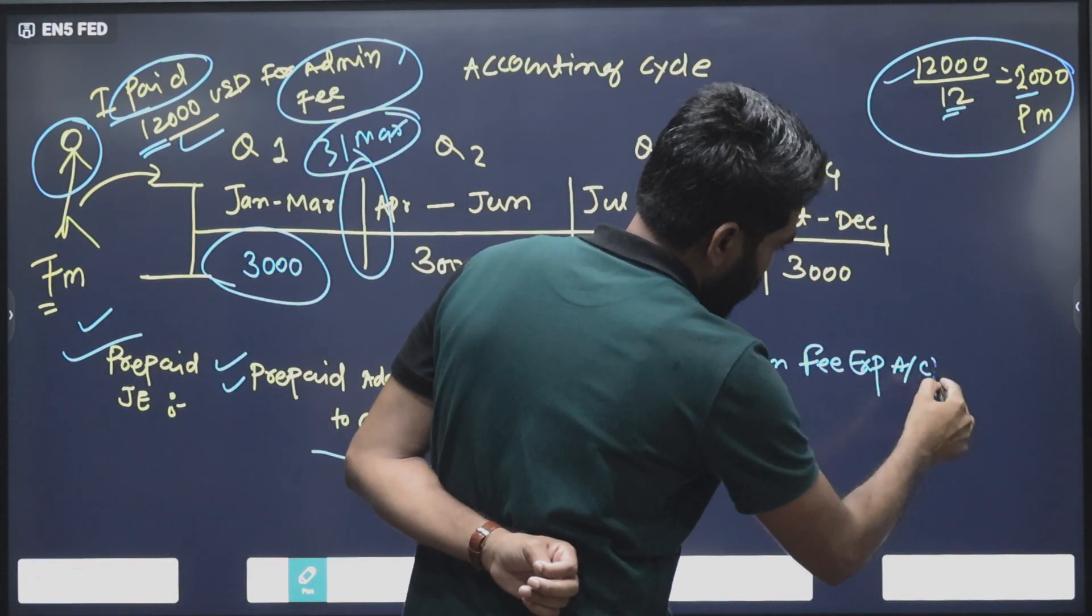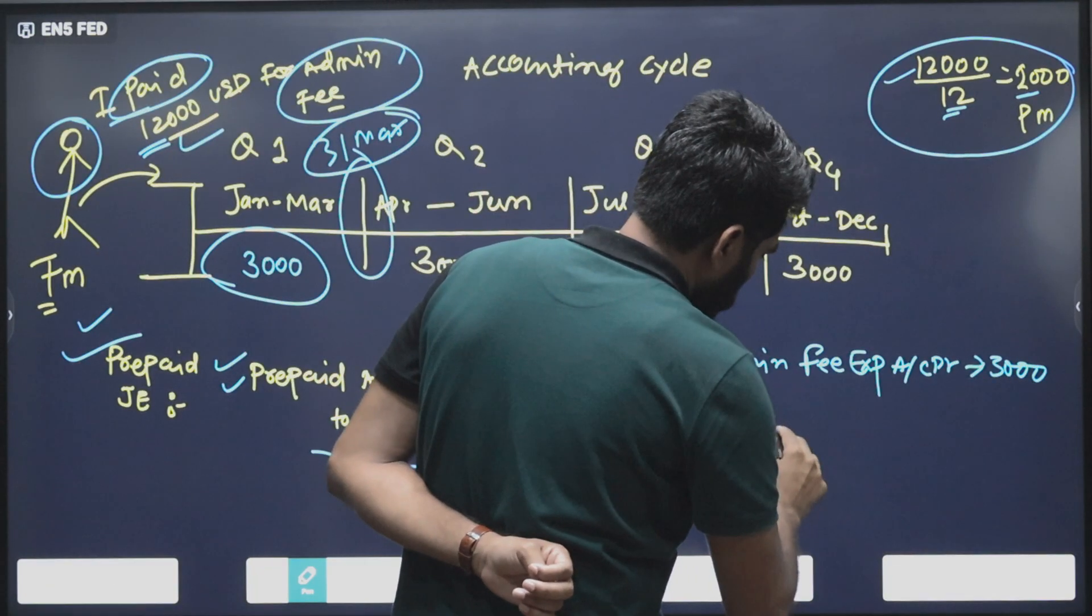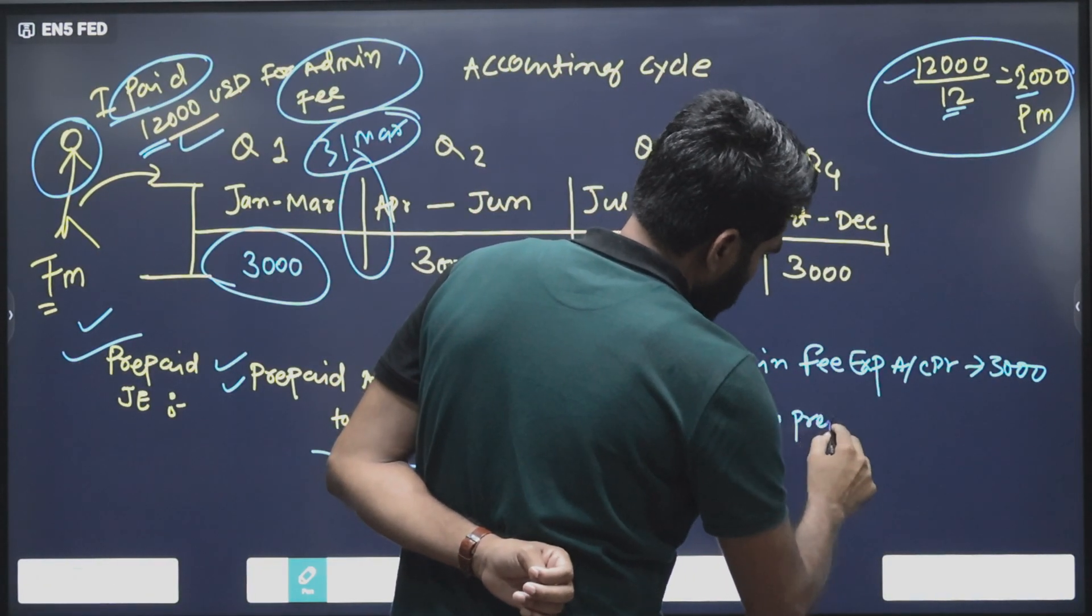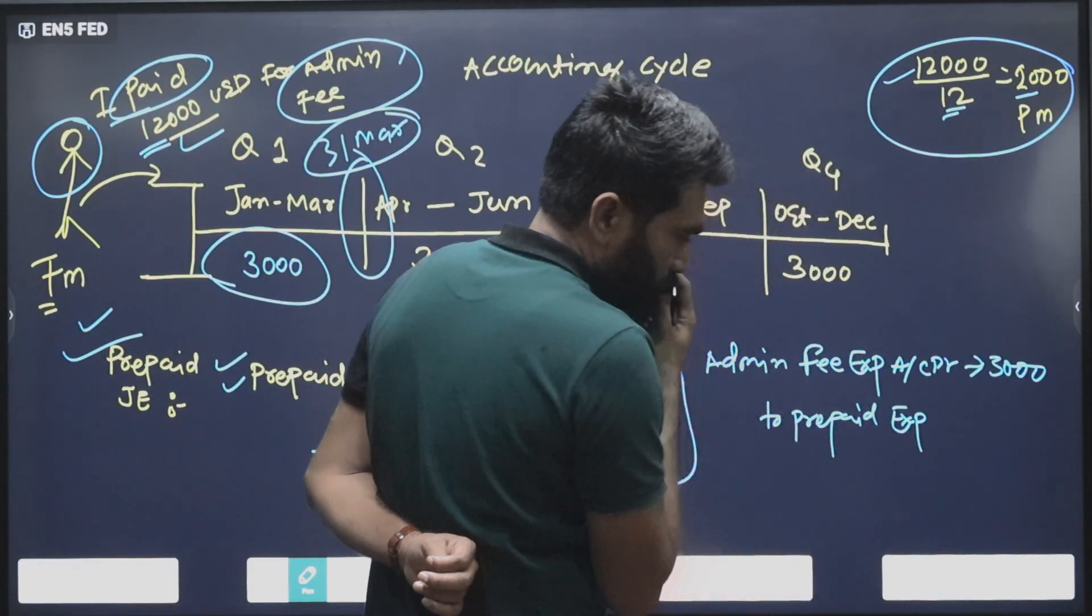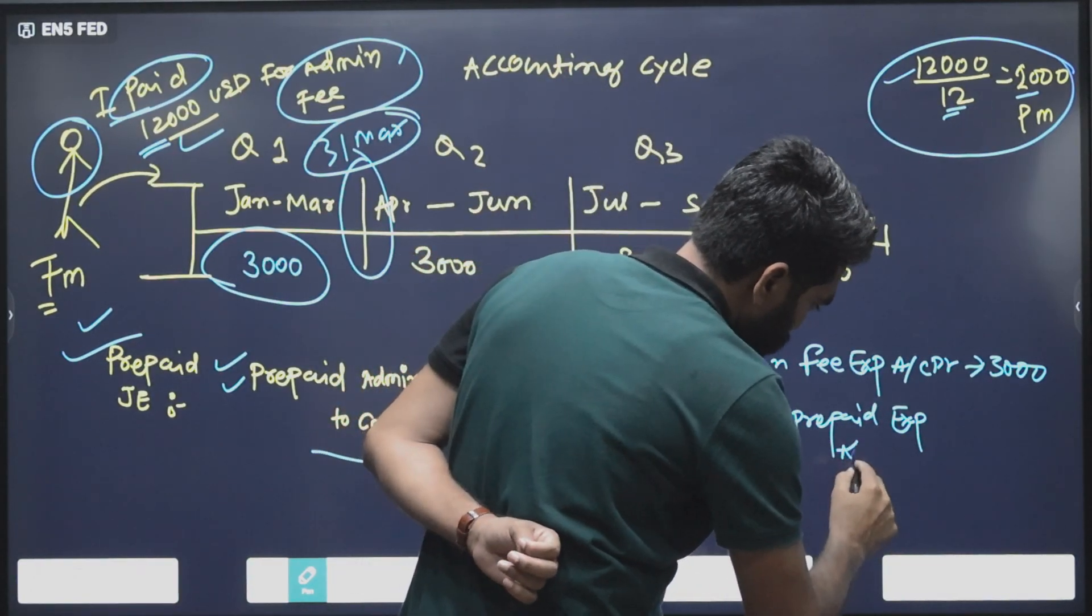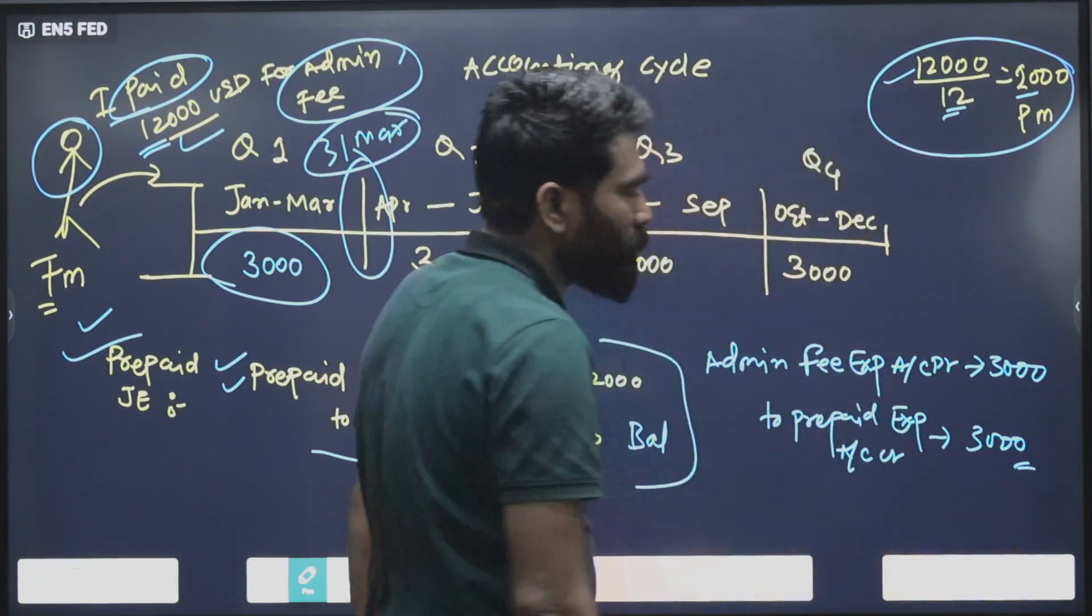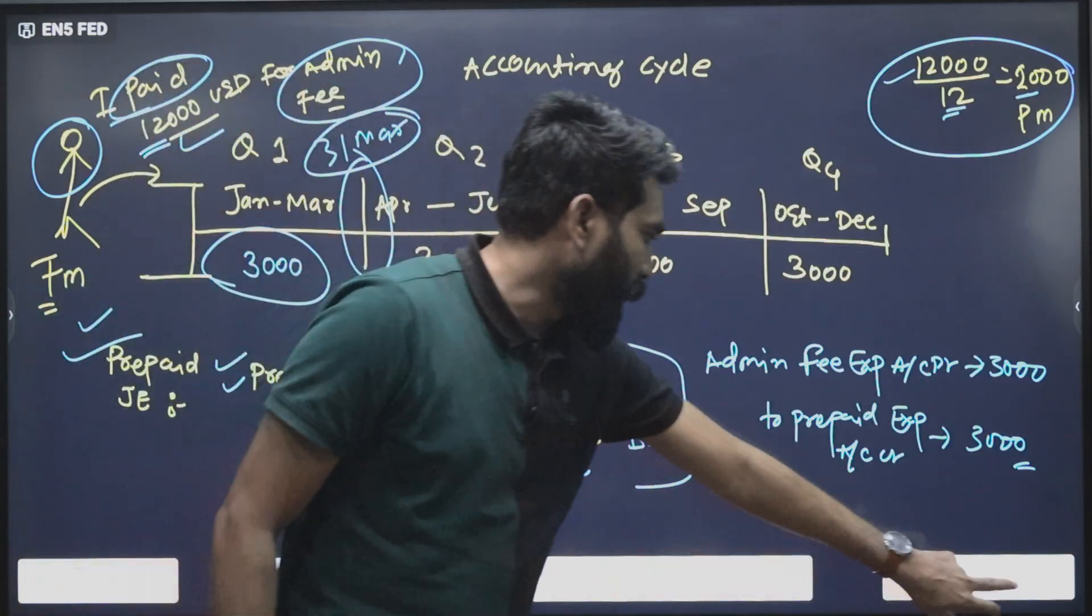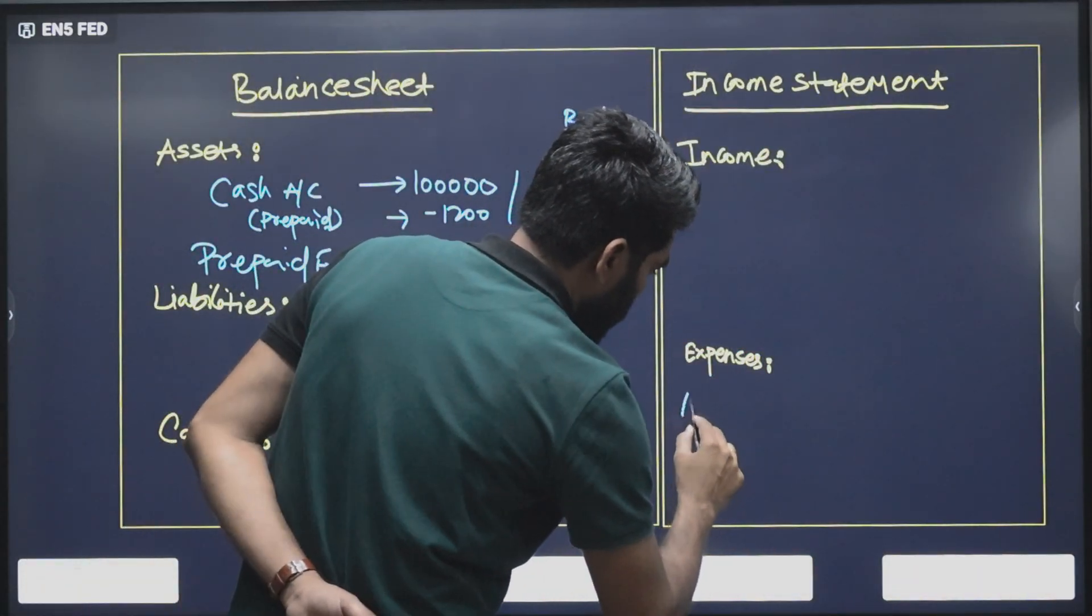Now our accounting entry would be on March 31st: Admin Fee Expense account debit which is $3,000 to Prepaid Expense account credit $3,000. We need to record the expense, Admin Fee, $3,000.